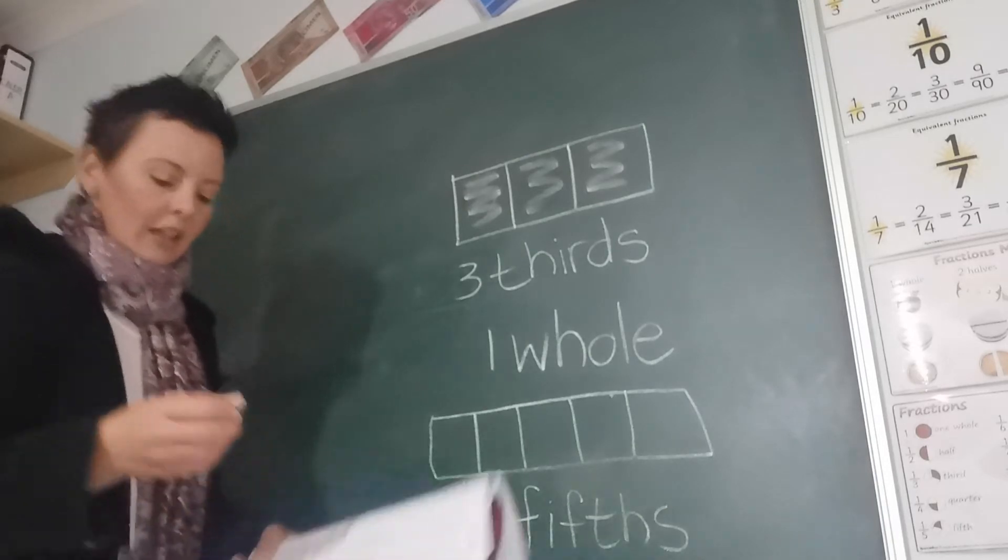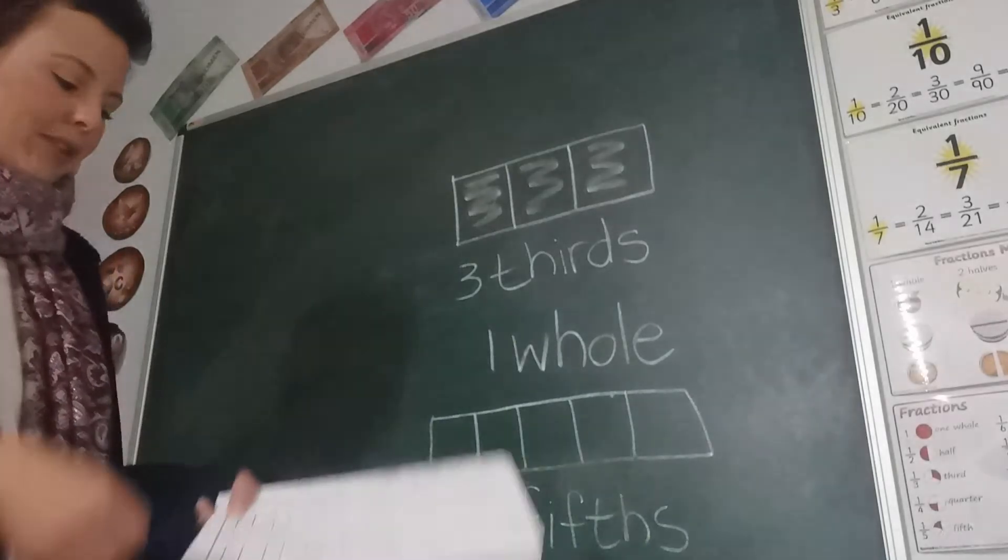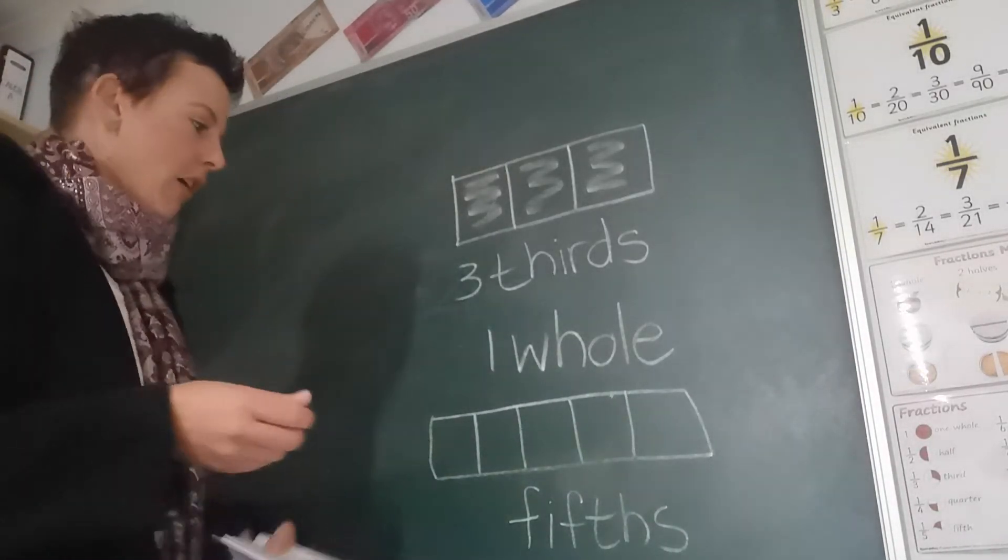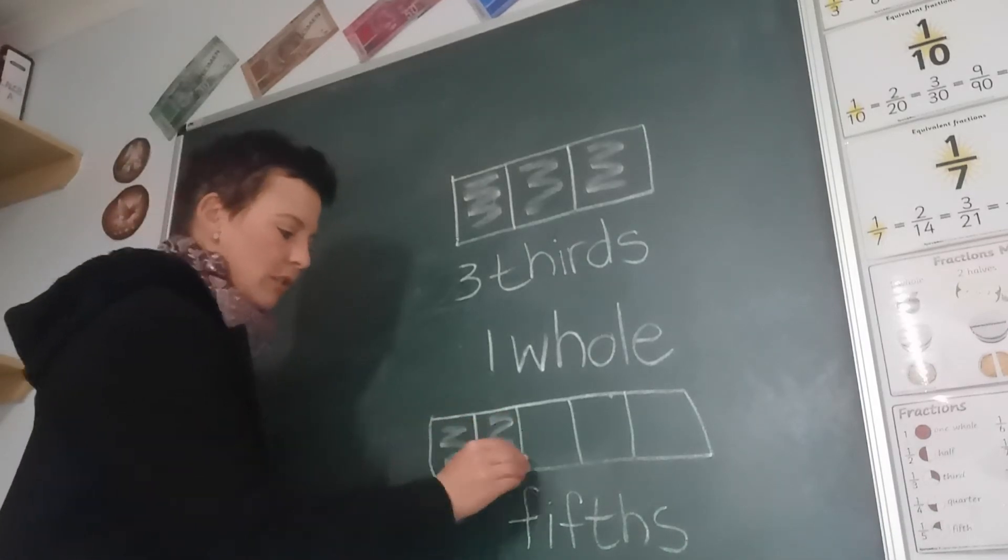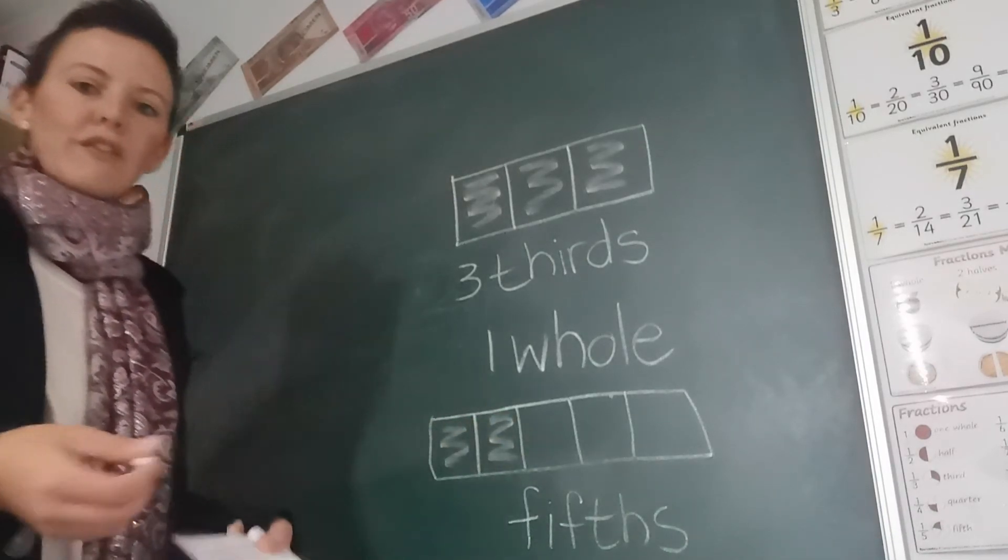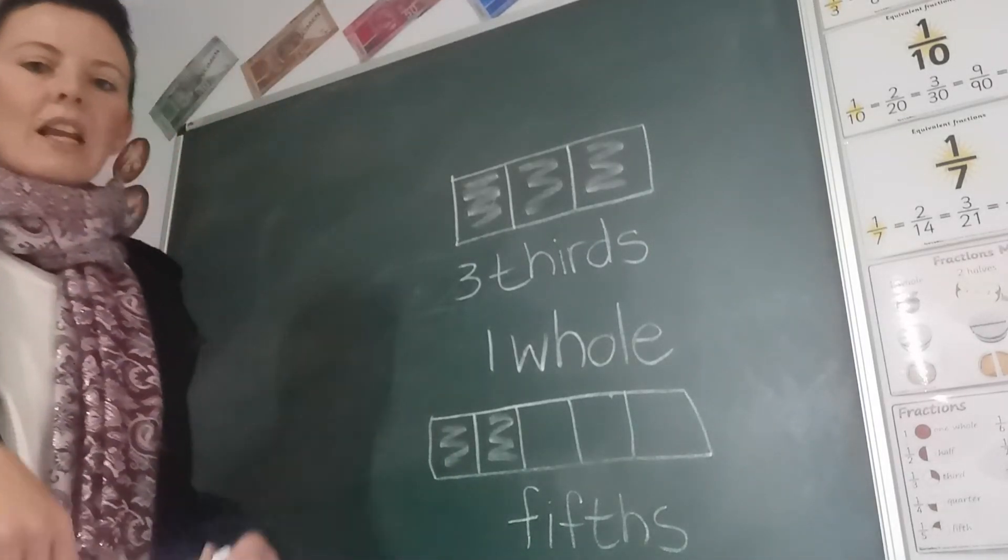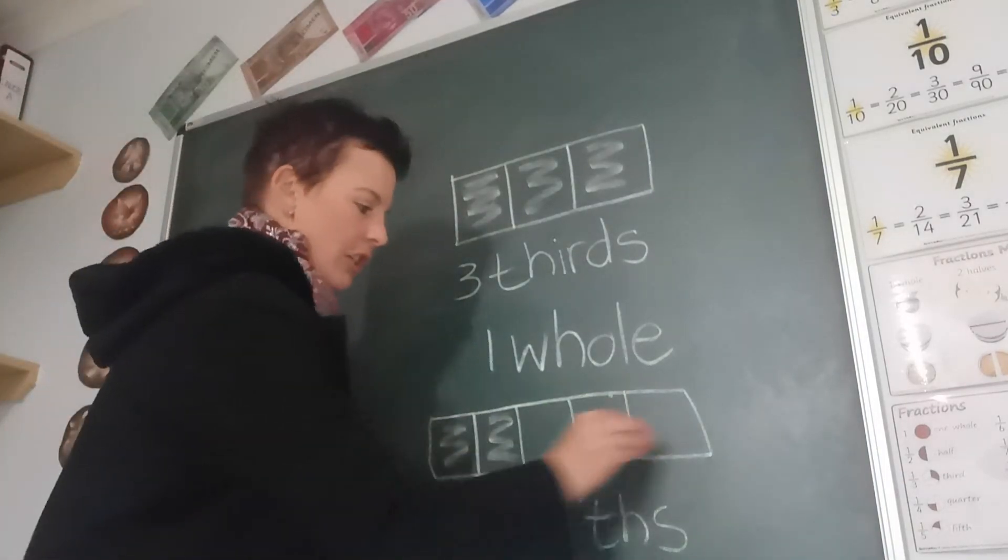Okay, then they ask you again to color in 2 fifths or 3 fifths or 4 fifths. If they ask you to color in 2 fifths, it means you color in 2 blocks. If it's 4 fifths, you color in 4 blocks. 5 fifths, you color in 5 blocks. 1 whole means it's the whole shape again.